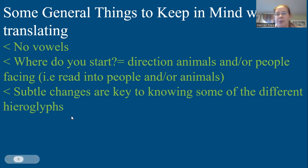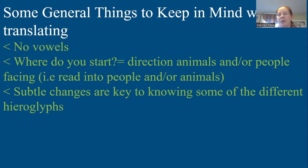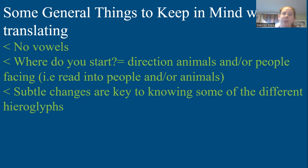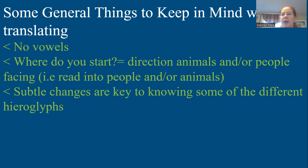When you're translating Middle Egyptian, here are some very general things to keep in mind. First, there are no vowels — any vowels you see in modern translation are basically educated guesses by modern Egyptologists, because we're not sure exactly how Middle Egyptian sounded. In terms of how you read Middle Egyptian, a lot of the hieroglyphic signs are of people or animals, and the direction that those people or animals are facing is the direction you start — you read into the people or animals. I'll show you some examples of how that works in practice a little bit later.